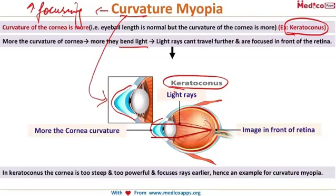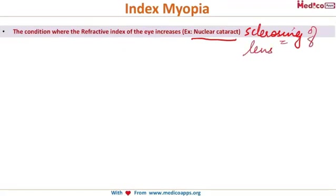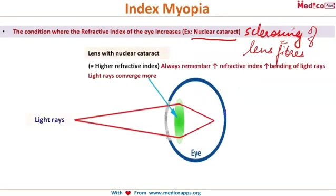Index myopia is the condition where the refractive index of the eye increases due to various diseases. The most common cause to remember is nuclear cataract, where the lens fibers start sclerosing. Because of this sclerosis of the lens fibers, there is increased refractive index, which causes increased bending of light rays and premature convergence, resulting in blurry vision. That is index myopia.